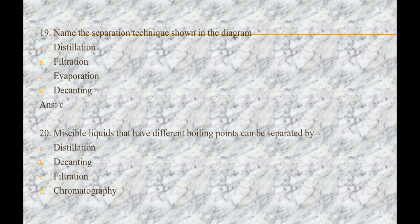Next question is: miscible liquids that have different boiling points can be separated by — option A) distillation, option B) decanting, option C) filtration, option D) chromatography. The answer is A, that is distillation.